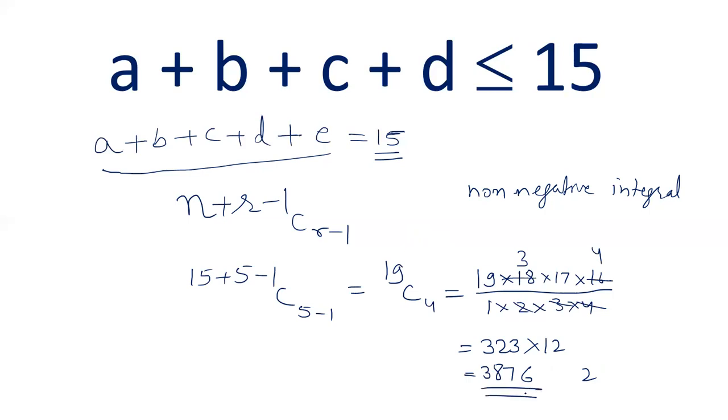So the number of possible values are 3,876, which includes every possible combination where the sum can be 15 or less. The idea was in this video I wanted to introduce this formula n plus r minus 1, c, r minus 1, and using an arbitrary variable.